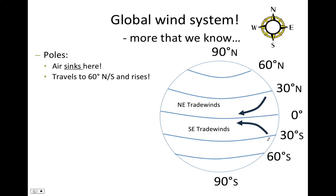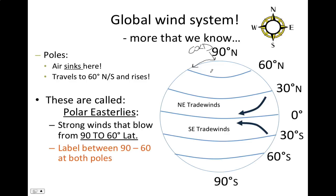Let's go to the poles. The poles are really, really cold, and cold air is going to sink and then travel along the surface. At 90 degrees north and south, the air is sinking and then moving along the surface towards 60 degrees north or south. These strong winds that travel from 90 degrees to 60 degrees are called the polar easterly winds. They are curving to the right in the northern hemisphere and to the left in the southern hemisphere. Pause the video and label the polar easterly winds in your notes.